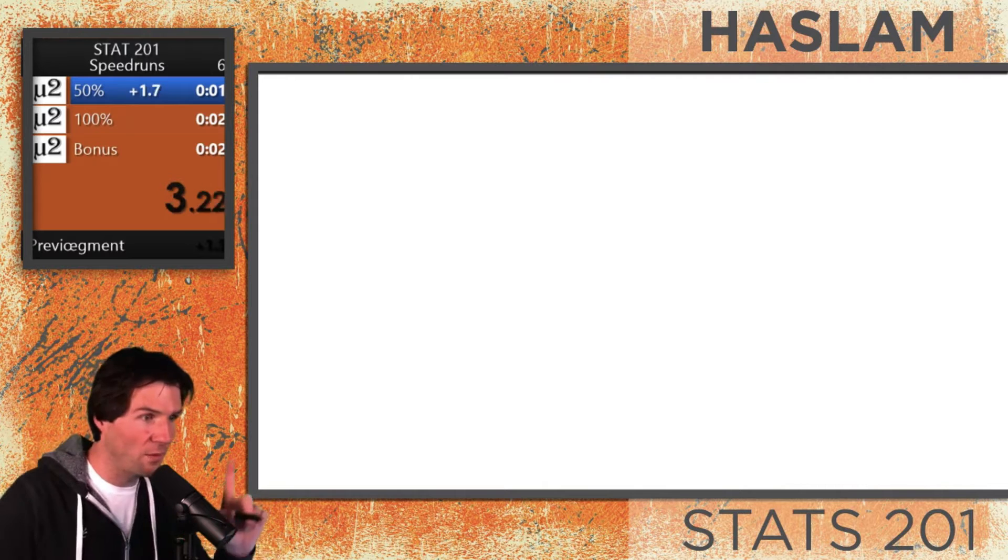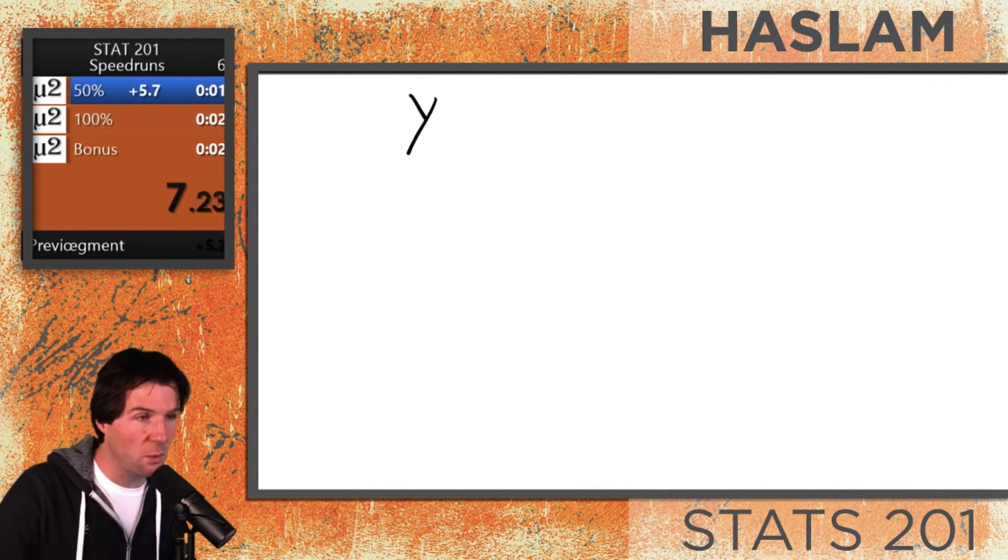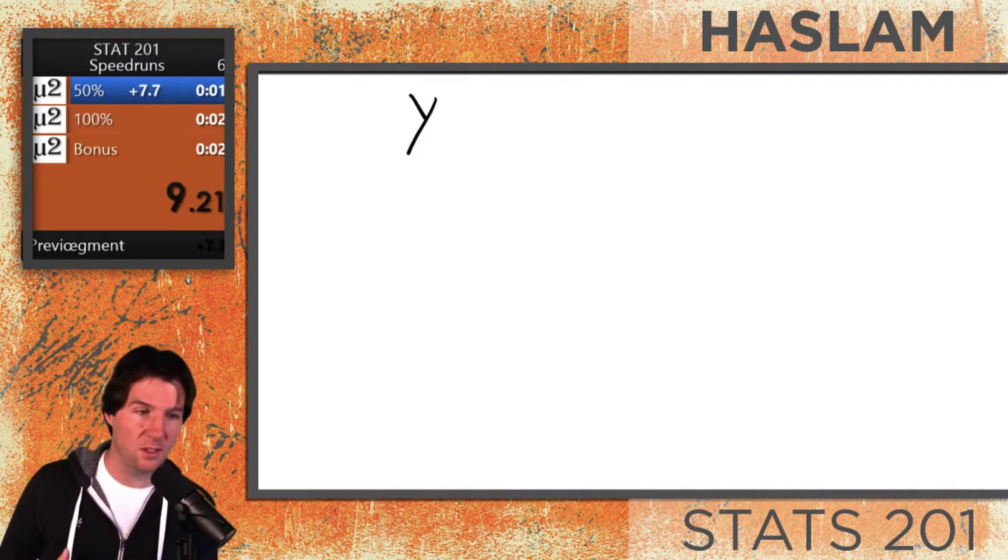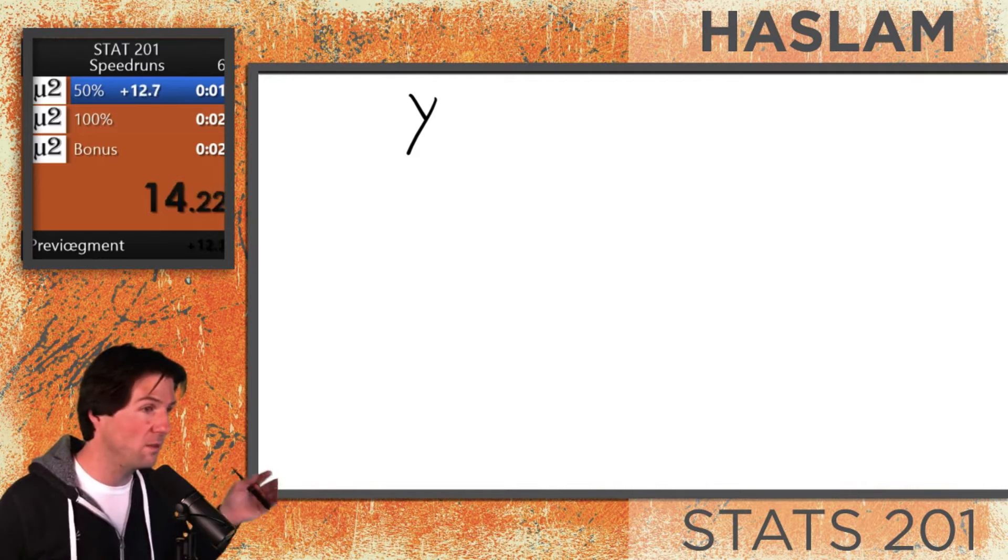When we do a z-score, we have to know a few things. We have to know an observation, which is going to be y. This can be things like your height. So your height would just be your observed height, like five foot eleven, six feet.